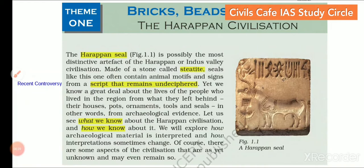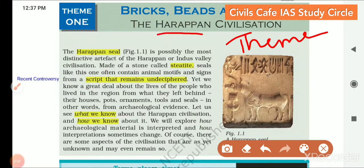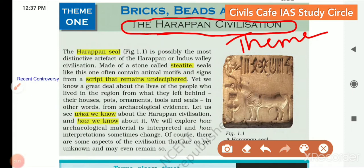There are three textbooks, one each on ancient, medieval and modern. In every textbook, the units are mentioned as themes. Understanding each theme is relevant for the UPSC exam because themes are the broader areas from which UPSC asks questions every year for both prelims and mains. For example, in the ancient history part, the first theme is Harappan civilization — you can expect at least one question from this area in prelims and mains. You just need to have these themes in your mind when you prepare.